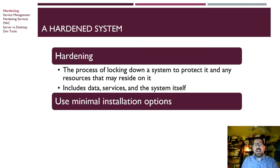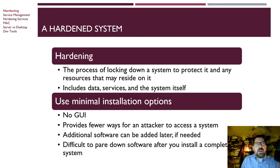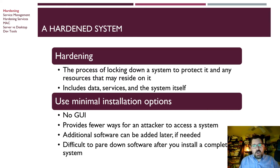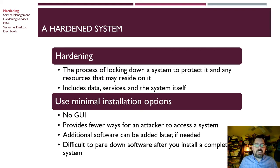So what exactly is hardening? Hardening is the process of locking down a system to protect it and all the resources on that system — that can include data, services, and the system itself. When we install a system and want to make it as hardened as possible, we generally try to use minimal installation options, like no GUI. We want to reduce the attack surface by disabling as many services as we can and removing any components that aren't required.